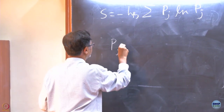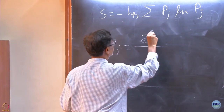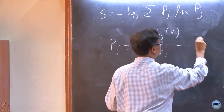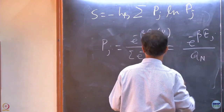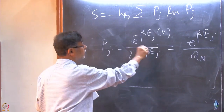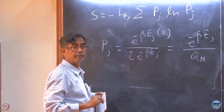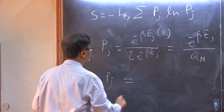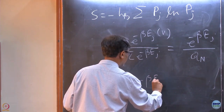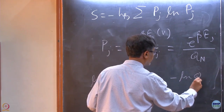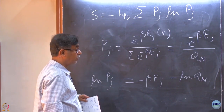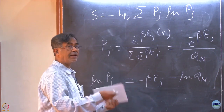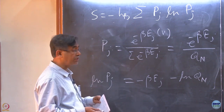So we just derived that Pj is the canonical distribution. Taking the logarithm, I get ln Pj equal to minus beta Ej minus ln Qn. Don't be too concerned about the subscripts — for the canonical partition function in the NVT ensemble, you always put N as a subscript and write TV or VT. I tend to write TV, but many books use VT.